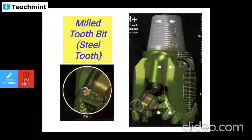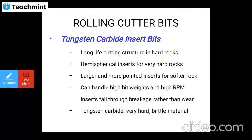Here you can see the milled tooth bit with steel teeth. Rolling cutter bits using tungsten carbide inserts provide a very long-life cutting structure for hard rock formations. Hemispherical inserts are used for very hard rocks, while larger and more pointed inserts are used for soft rocks. These bits can handle high bit weights and high RPM.